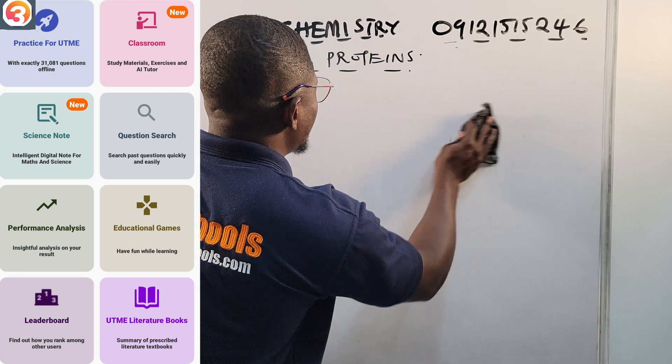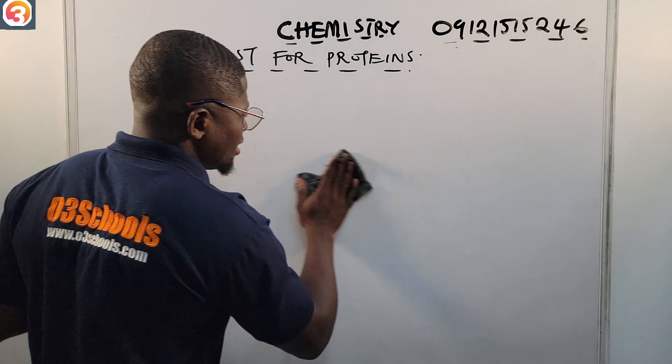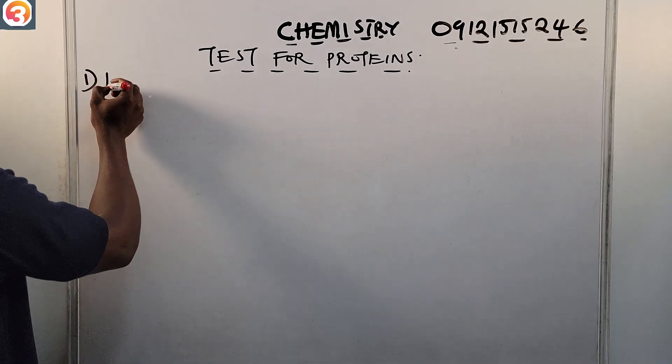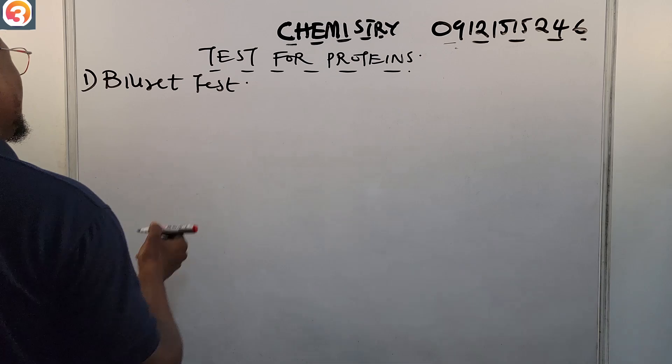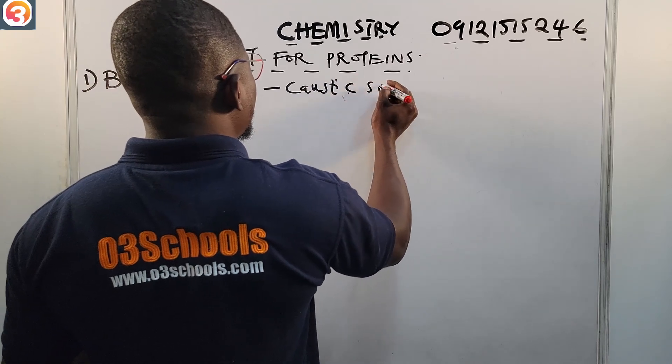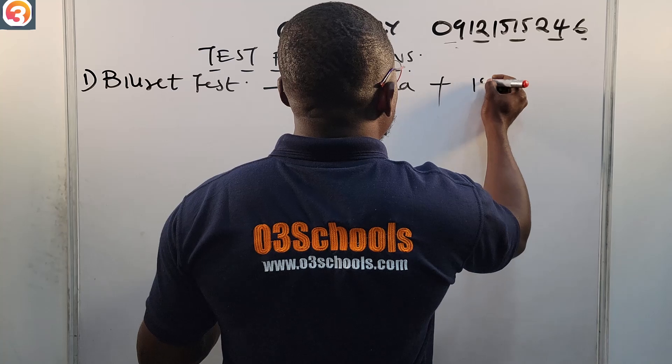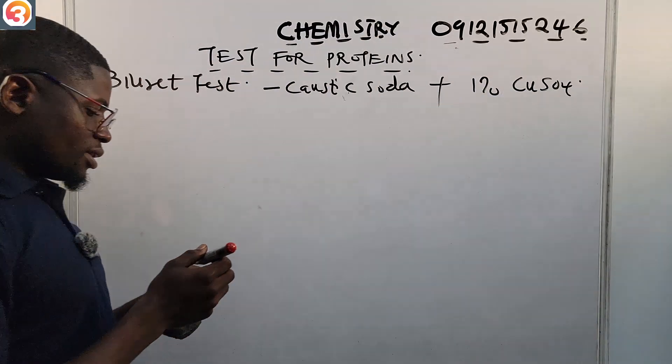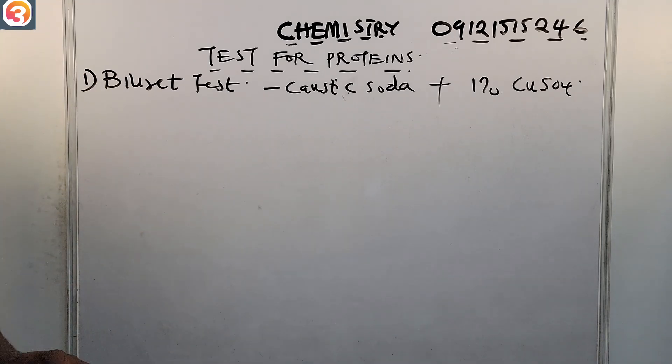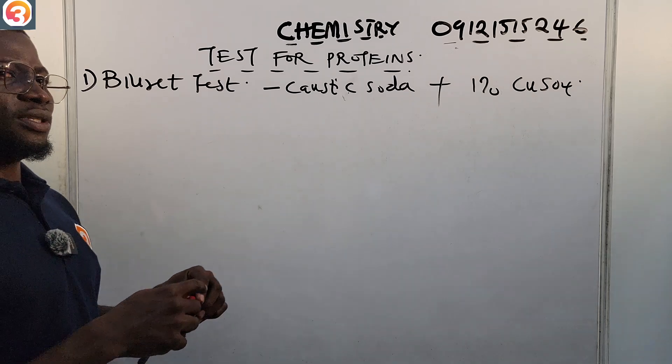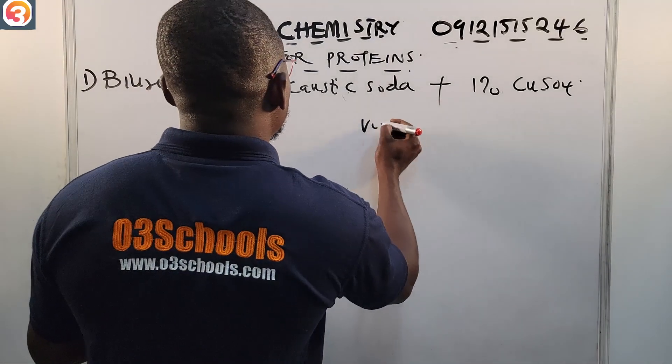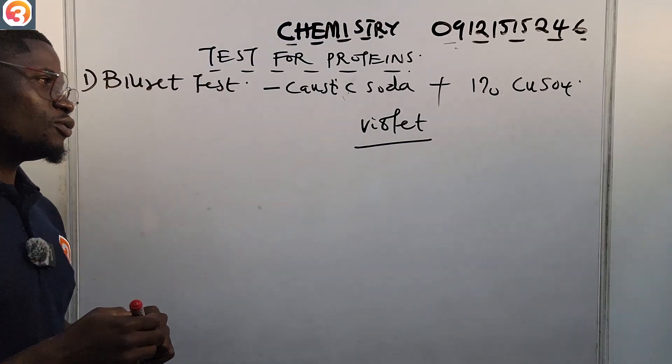Now, tests for proteins. There are three major tests I'm going to look at for testing for proteins. Number one is called the Biuret test. For this Biuret test, what you use is caustic soda and we use 1% copper sulfate. Once this is put on a substance that contains protein, what happens is that the positive result that we would observe is a violet color.